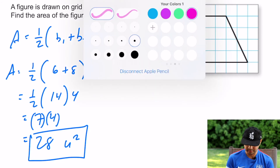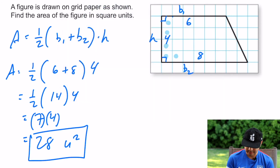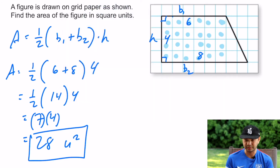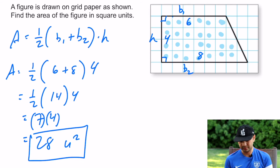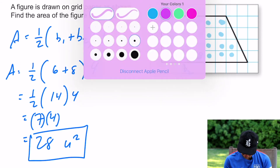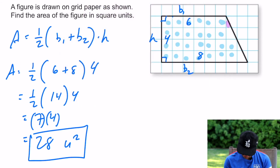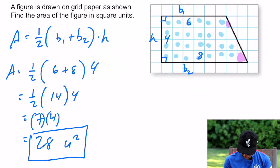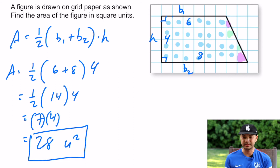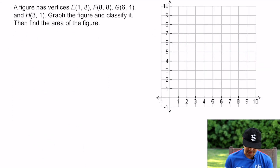And if I actually count the little squares to verify — counting gives 27 partial squares plus one more — it comes out to 28 square units, confirming the formula result.